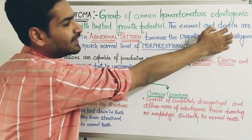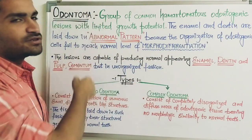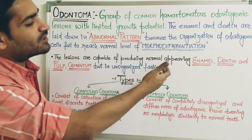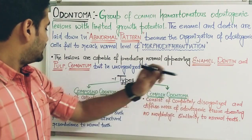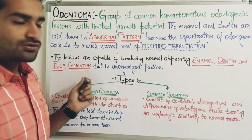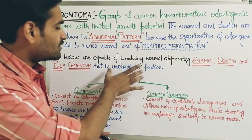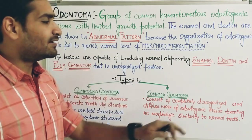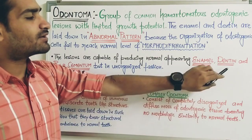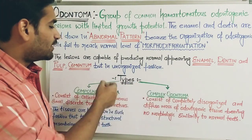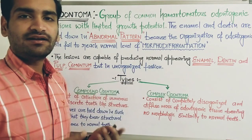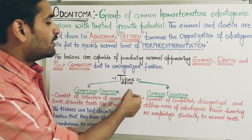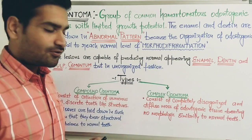After histodifferentiation is complete, when morphodifferentiation is about to happen — when tooth morphology starts forming — if any abnormal change occurs or an abnormal pattern of laying down of enamel and dentine occurs, that leads to formation of odontoma. The lesions are capable of producing normal-appearing enamel, dentine, pulp, and cementum, but all in an unorganized fashion — it is not necessary that a tooth-like structure will form.